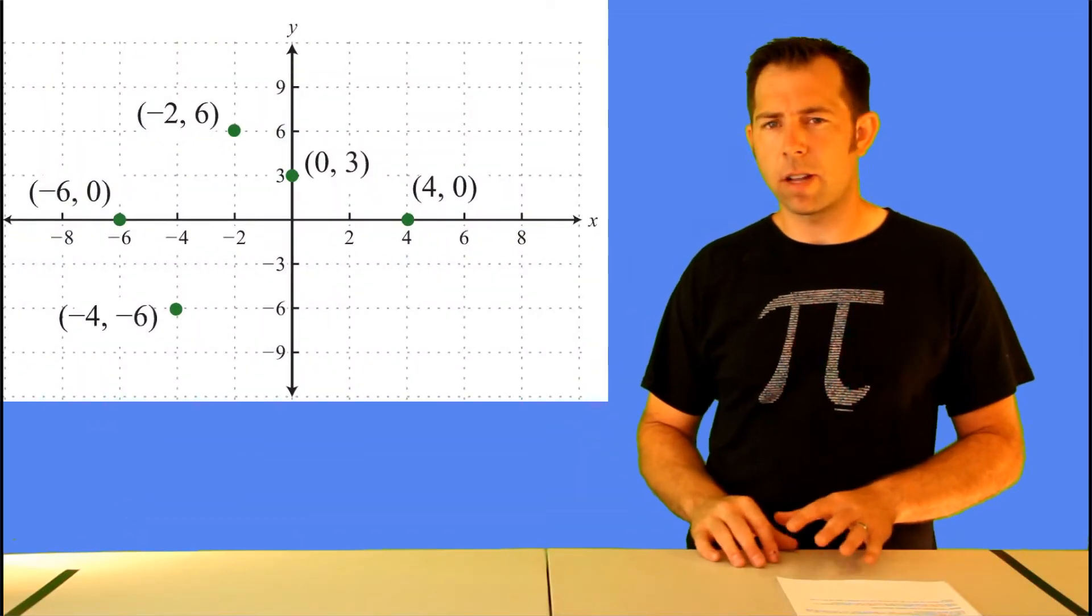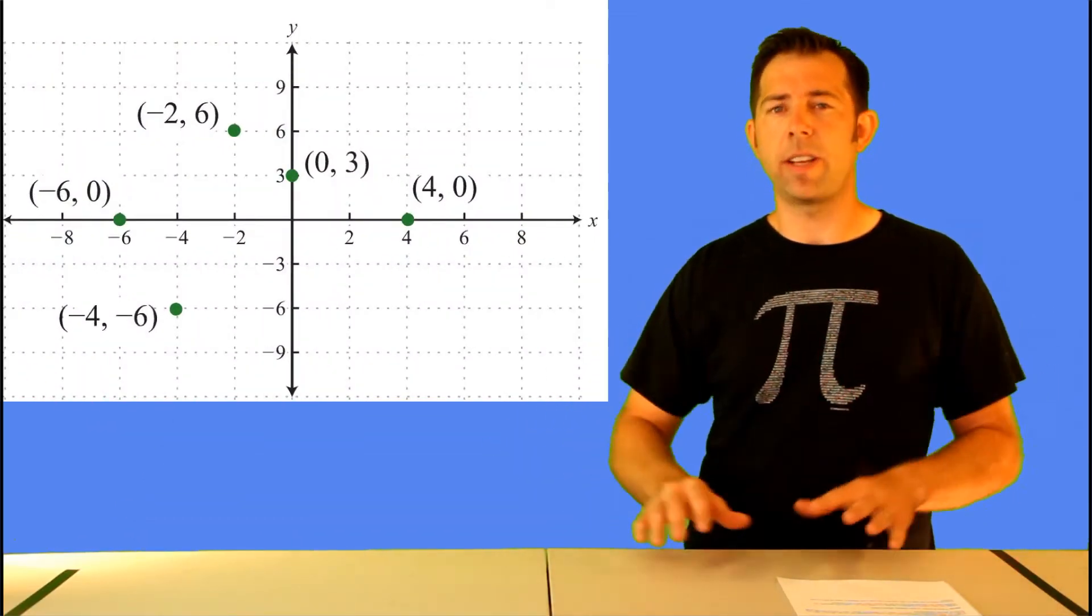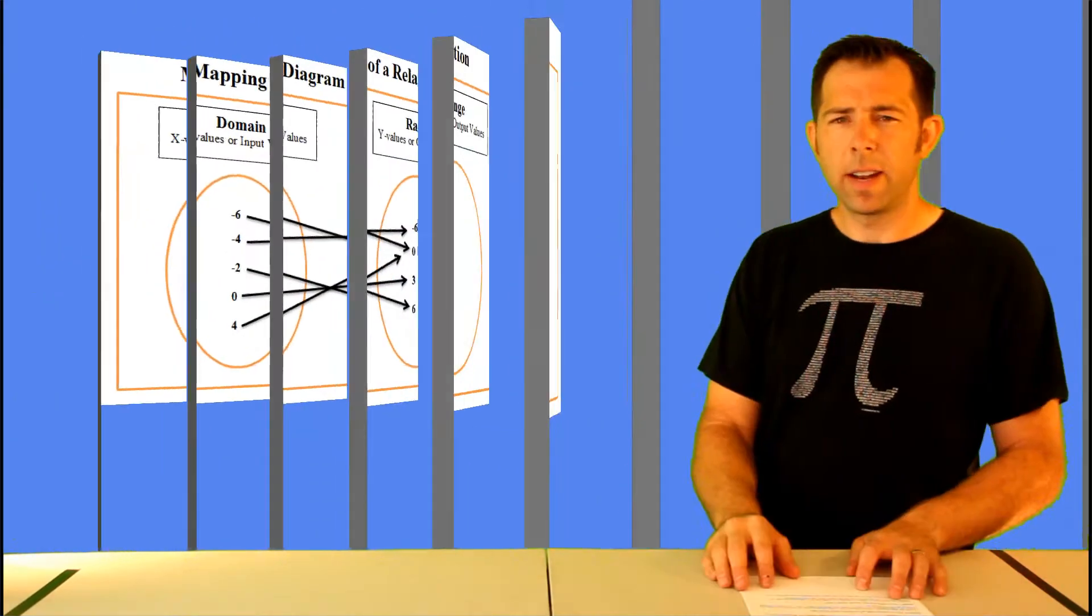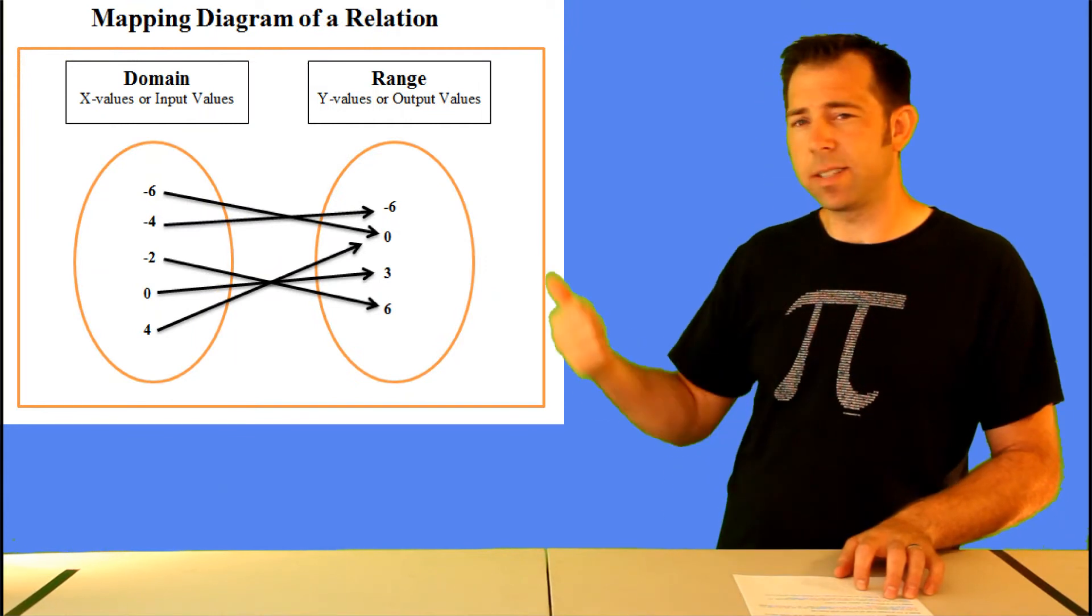So here's a set of ordered pairs called a relation. Anytime we have just a set of points, that's called a relation. Now notice this is just five points set up on a rectangular coordinate plane.